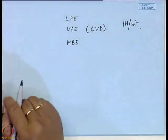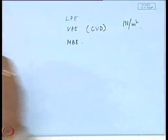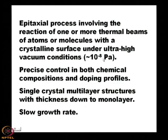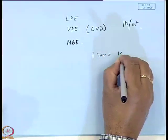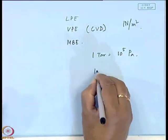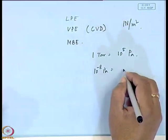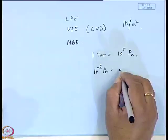One Pascal is one Newton per meter squared. The ultra-high vacuum in MBE is on the order of 10⁻⁸ Pascal. Since 1 Torr equals approximately 10⁵ Pascal, 10⁻⁸ Pascal corresponds to about 10⁻¹³ Torr — an extremely high vacuum.